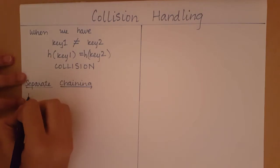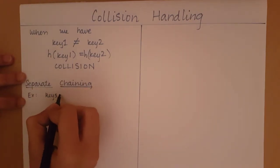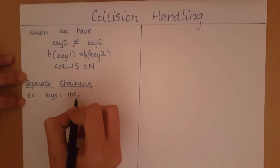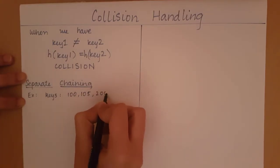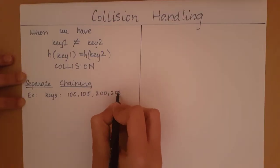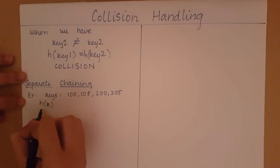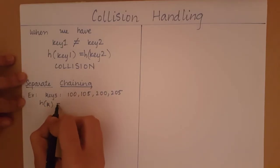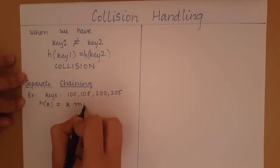Let's say in my example, my keys are going to be 100, 105, 200, and 205. I am going to say that my hash function h is going to equal to k mod 10.